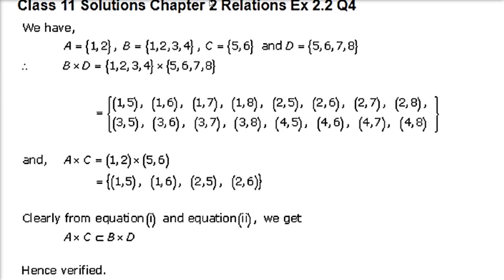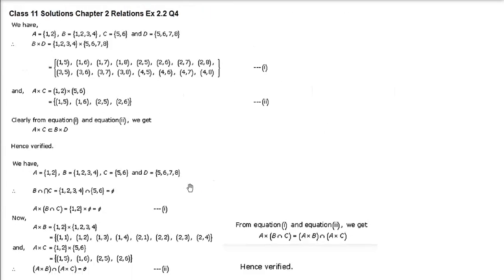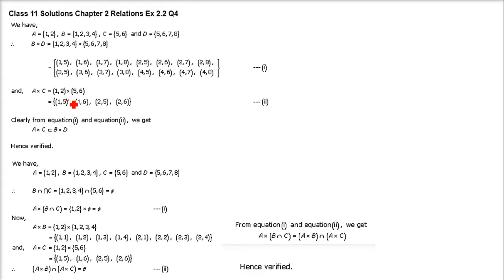A cross C with A={1,2} and C={5,6} gives: (1,5),(1,6),(2,5),(2,6). Now looking at B cross D, we can see (1,5) is there, (1,6) is there, (2,5) is there, and (2,6) is there. All elements of A cross C are present in B cross D. So A cross C is a subset of B cross D. This has to be verified and we have verified it.